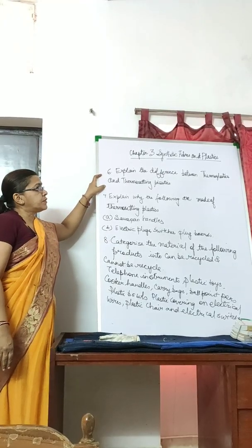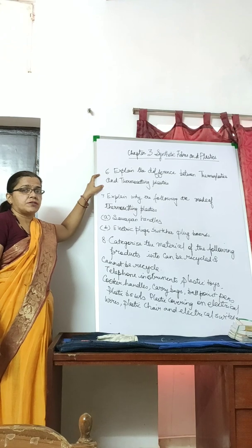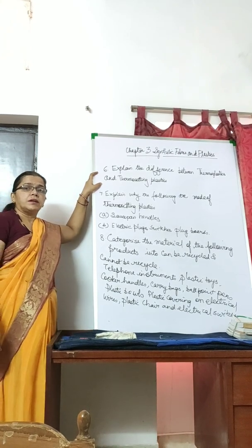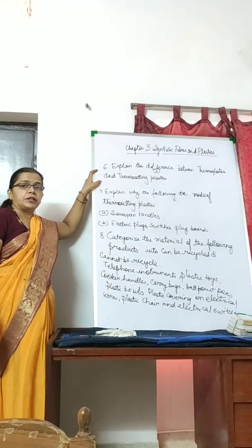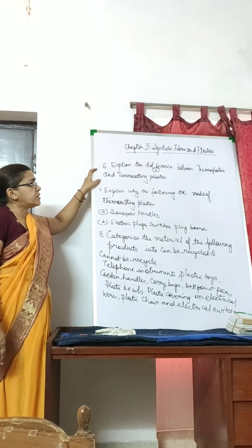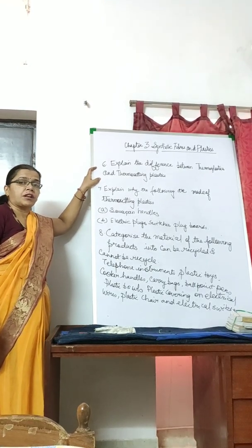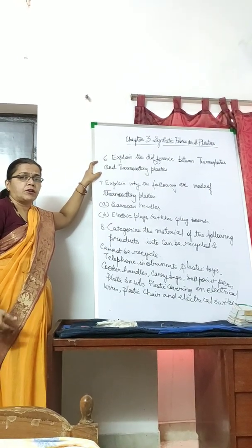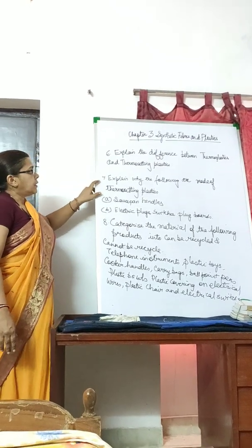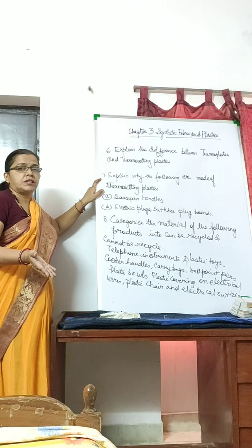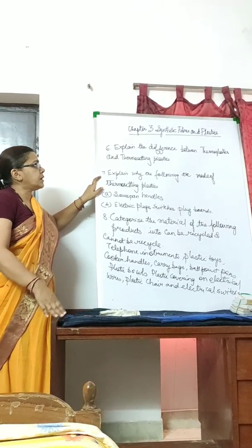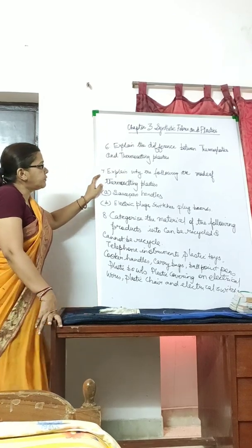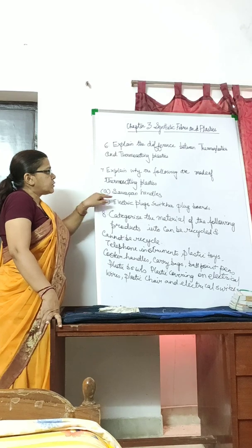Question six: Explain the difference between thermoplastics and thermosetting plastics. Thermoplastics are those which can be easily bent and reshaped on heating. Thermosetting plastics cannot be remolded or softened on heating. Examples of thermoplastics include polythene and PVC, while thermosetting plastics are used for making saucepan handles.